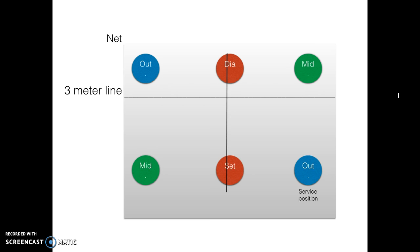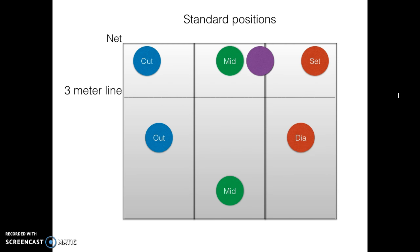After the service, everybody will go to their natural position which is as follows. We have the outsides on the left, the middle in the middle, and the setter and diagonal on the right. When the setter starts in the front, he will be on the right front. When the diagonal starts in the front, it will be like this.